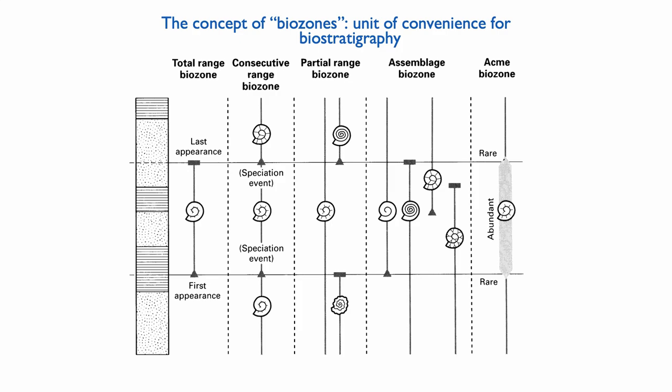So let's start with the most simple biozone, the one you've seen when we did the graphic correlation exercise. So that's known as the total range zone. If you have one fossil that appears at some point and disappears at some point and that this appearance is global in every basin of the world and the disappearance is also global, you can use its total range.